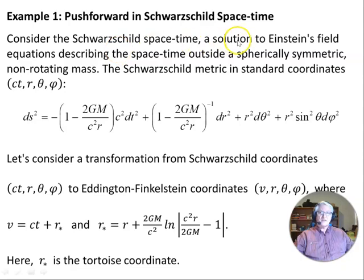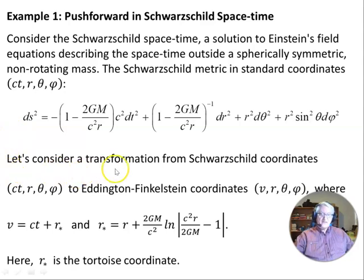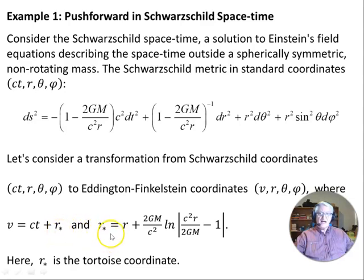We consider the Schwarzschild space-time solution to Einstein's field equations. It describes the space-time outside a spherically symmetric non-rotating mass, and the Schwarzschild metric in standard coordinates ct, r, θ, φ gives us the line element shown here. We consider the transformation from Schwarzschild coordinates ct, r, θ, φ to Eddington-Finkelstein coordinates v, r, θ, φ, where v equals ct plus r★, and r★ is the tortoise coordinate.